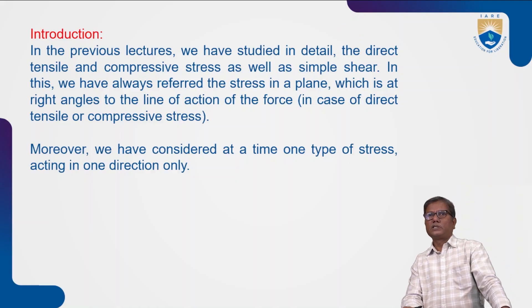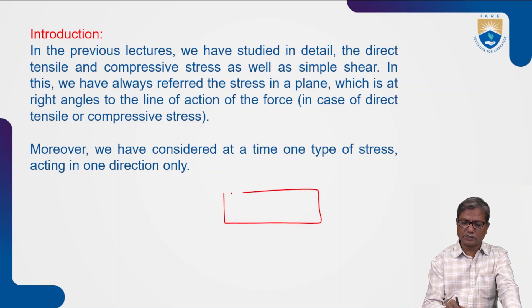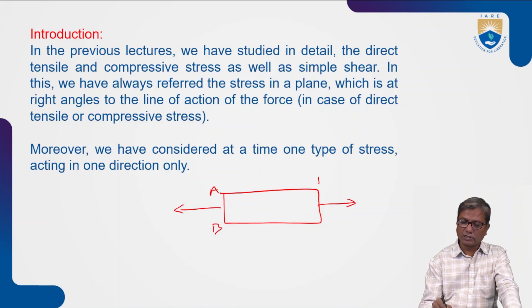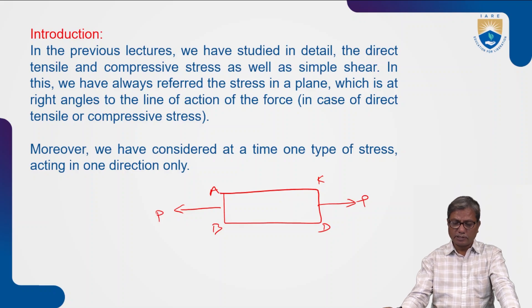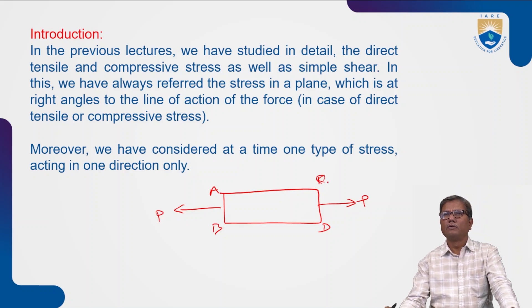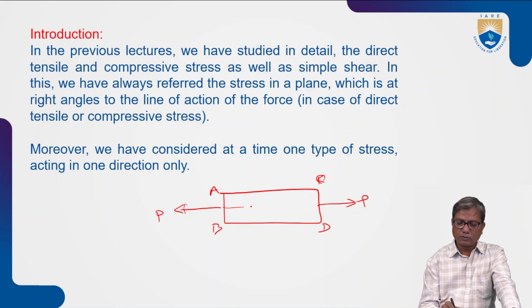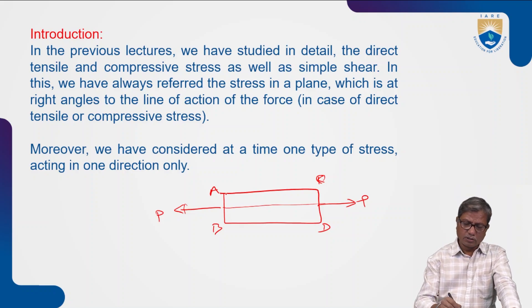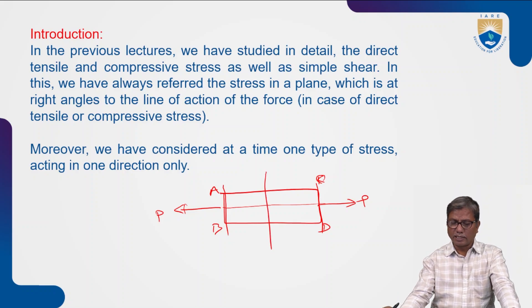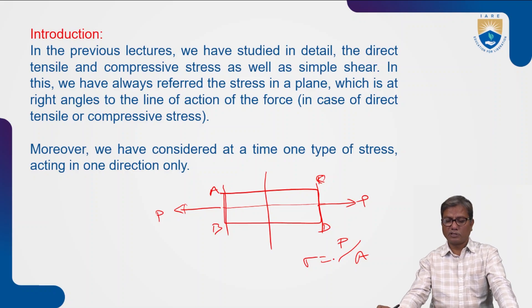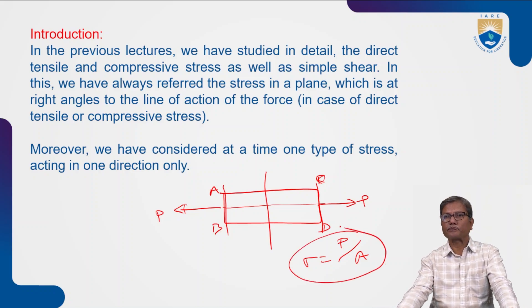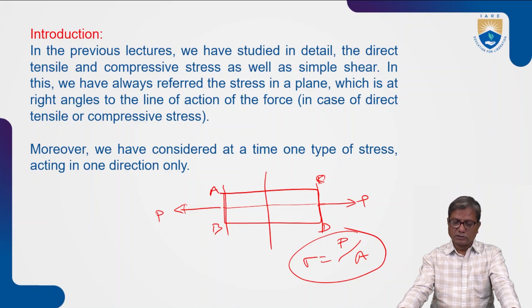In the previous topics, such as simple stresses, what we have seen is the direct stresses — direct compression or direct tension. For example, in the body ABCD, the stresses develop due to axial pull P on the faces AB and CD, or any other section perpendicular to the axis, is P by A. The stress induced is P by A and this stress is normal stress, normal to the cross section.